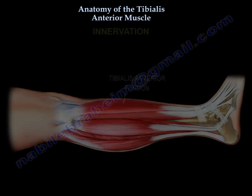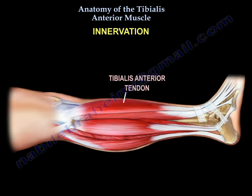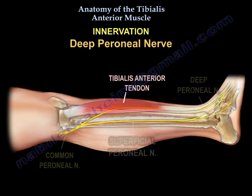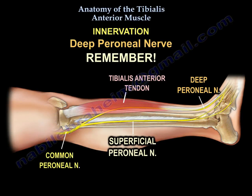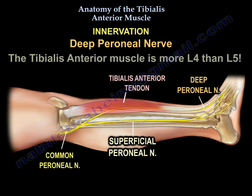The innervation of the muscle is the deep peroneal nerve. It is important to remember that the tibialis anterior muscle is more L4 than L5.